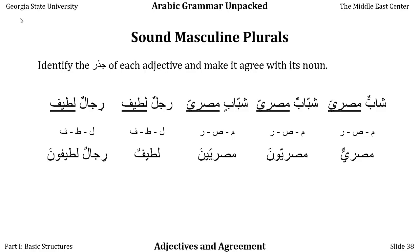However, your native speaker friend might tap you on the shoulder and say that it's actually not latifun but lita'f — because latif, like many simple adjectives, has an irregular human plural. The equivalent in English would be saying 'three childs' instead of 'three children.' If you said rijalun latifun, everyone would understand exactly what you meant — proper Arabic is rijalun lita'f, but that's something you'll gradually pick up.